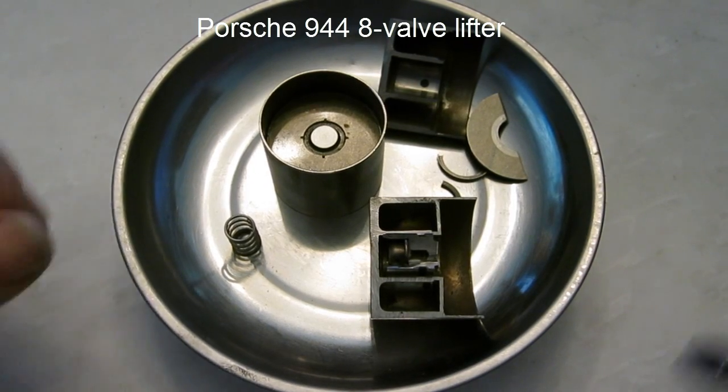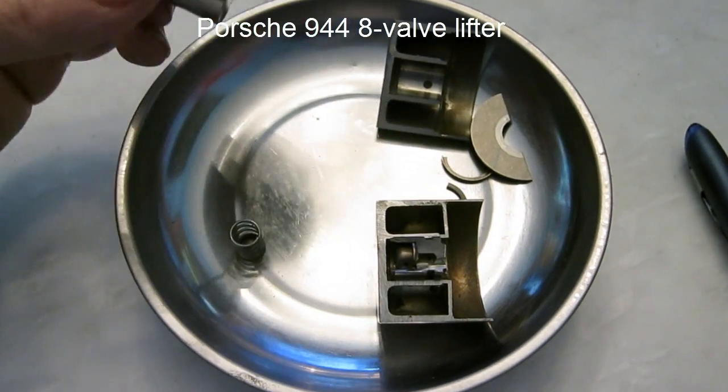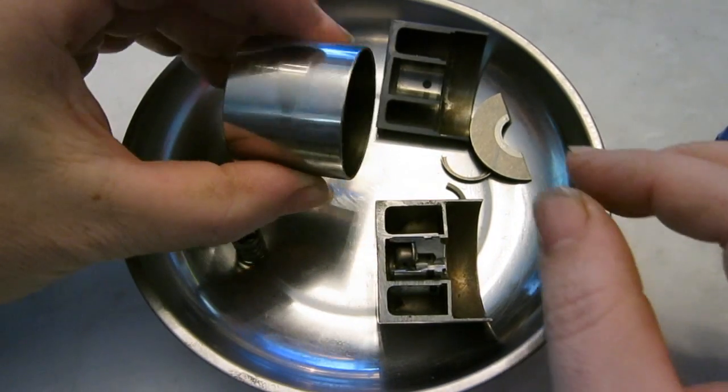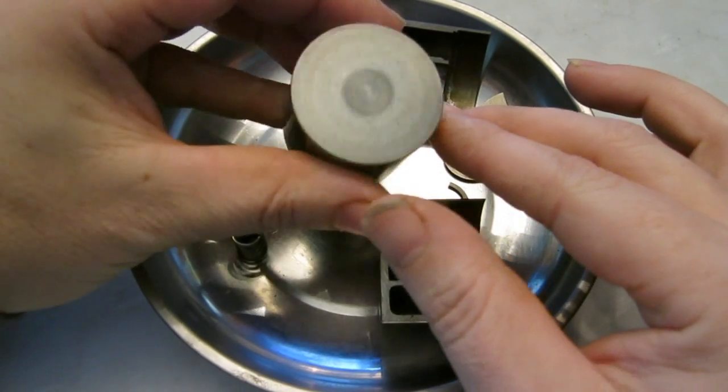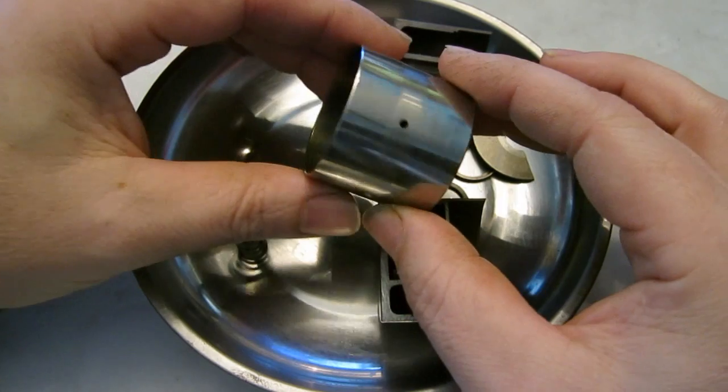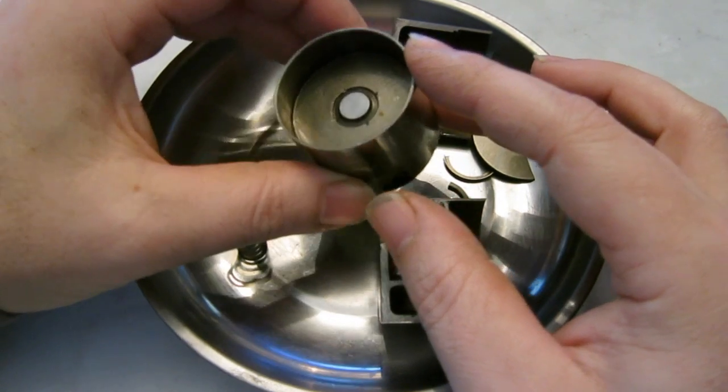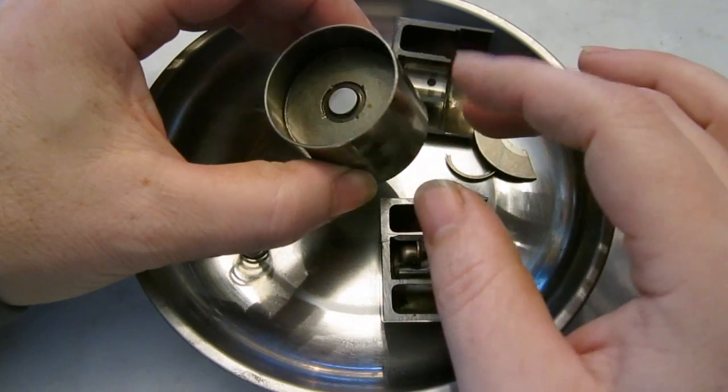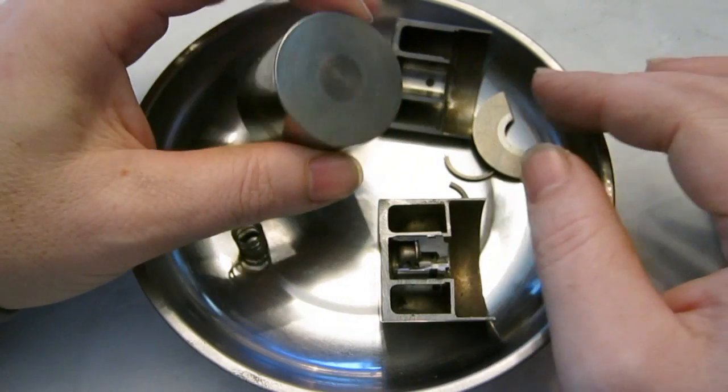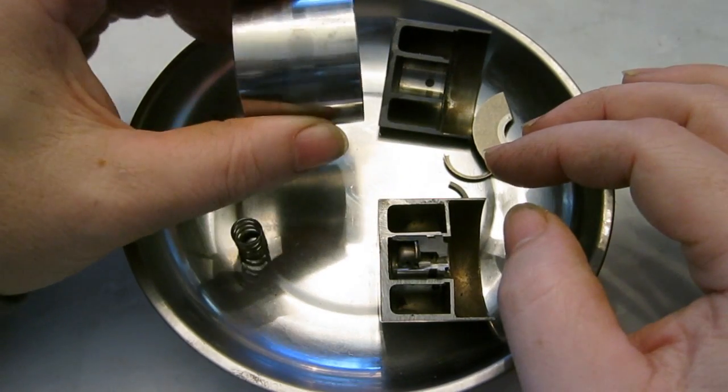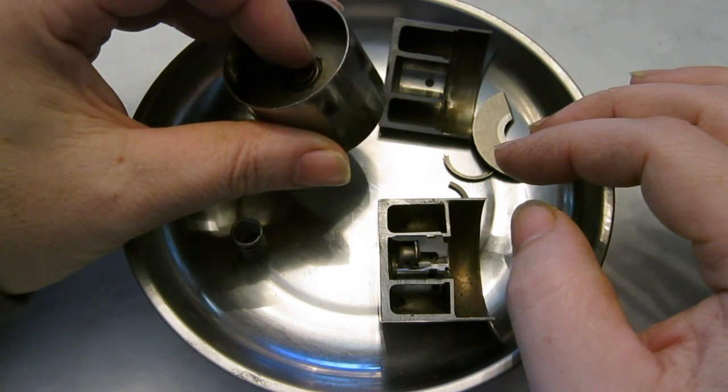Have you ever wondered what's inside a Porsche hydraulic lifter, or probably any hydraulic lifter? This is a hydraulic lifter from a 944. It would be similar to a 928, a 944 8-valve. So the 928 was about the same for its 16-valve, and then a 4-valve per cylinder engine.